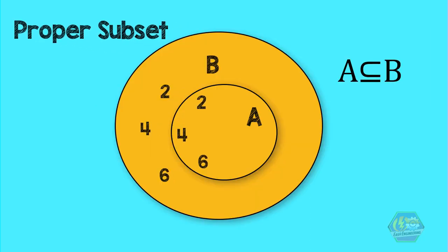Take for example, the set 2, 4, 6 is a subset of 2, 4, 6, 8. But it is not a proper subset of 2, 4, 6, 8.